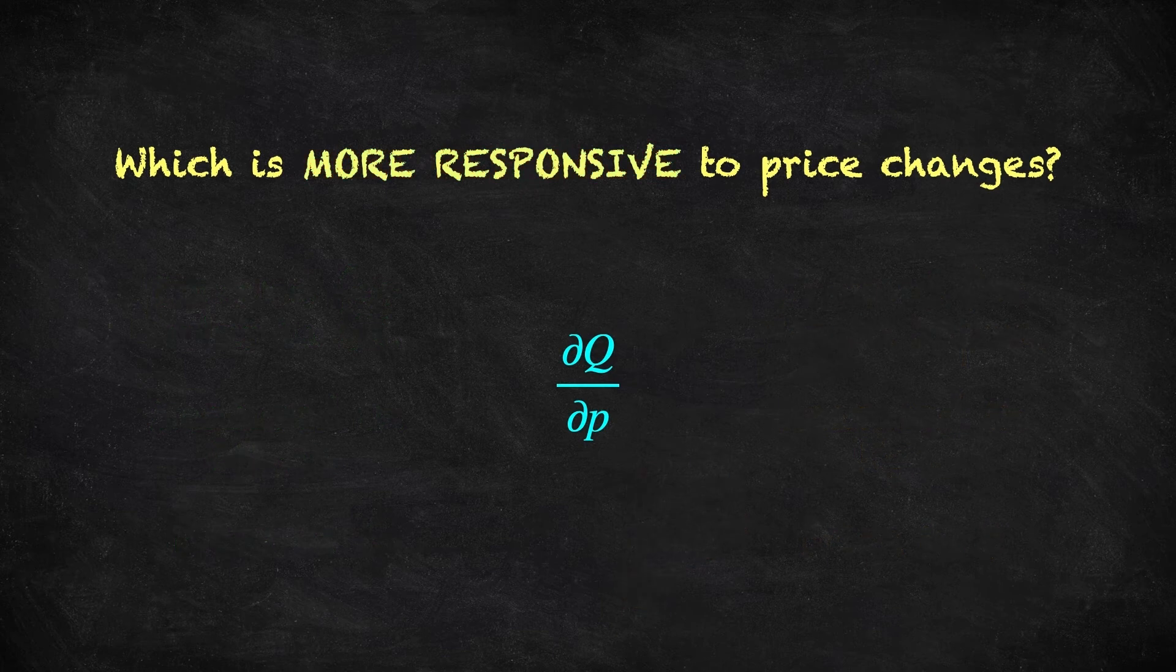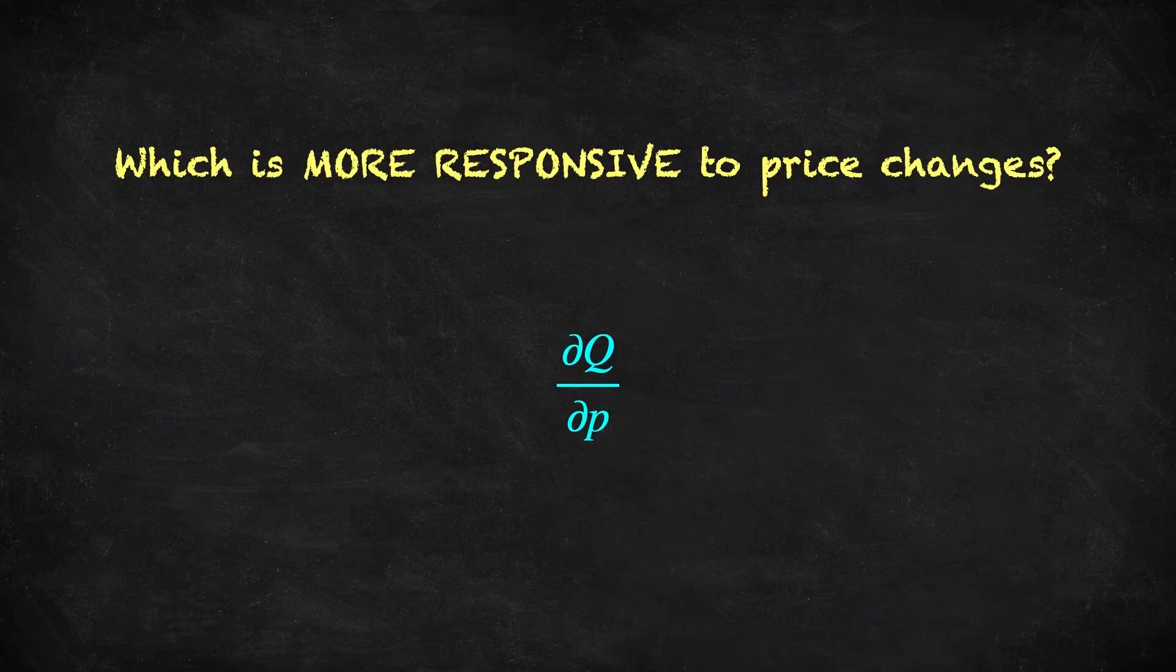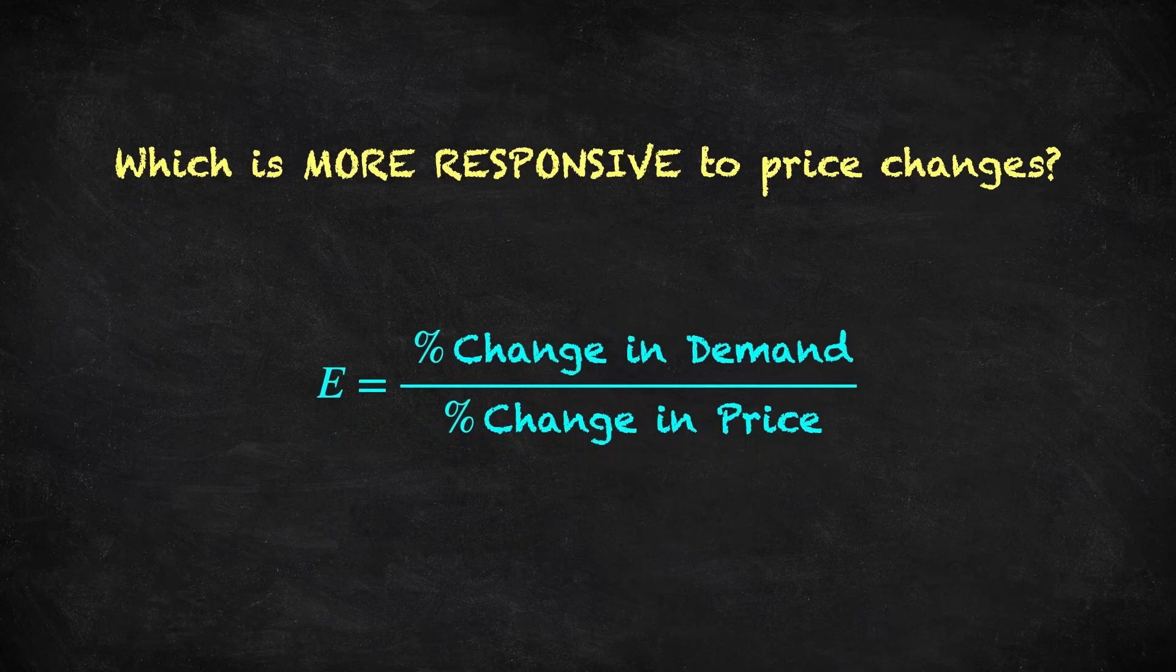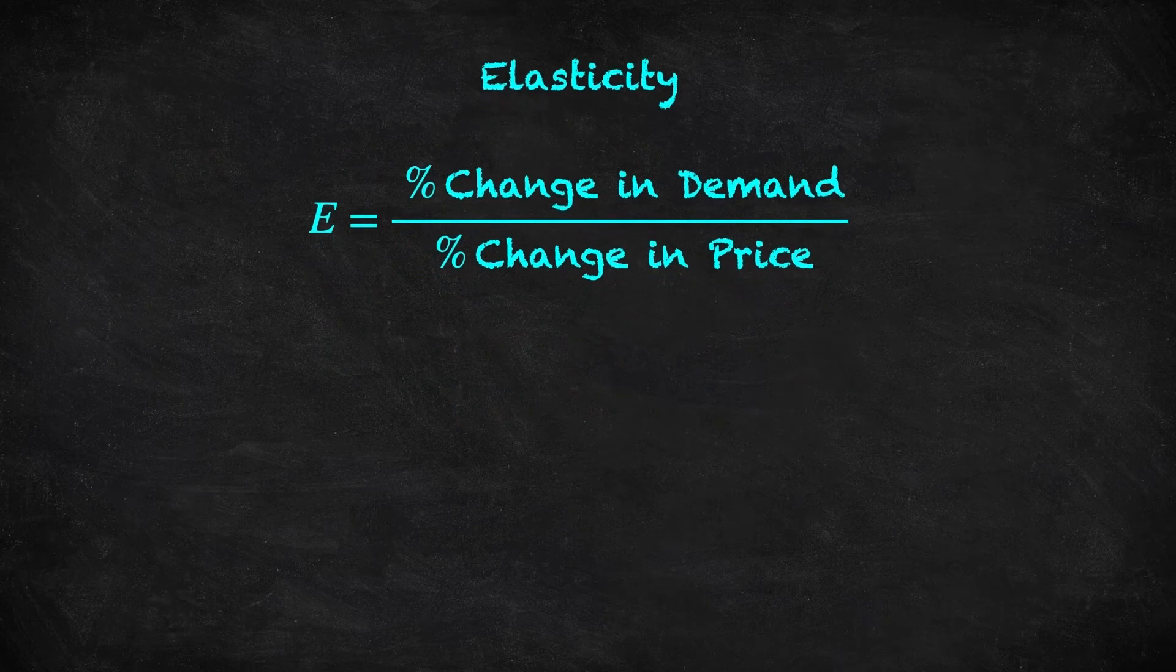OK, so let me show you the idea that's widely used in economics. Instead of looking at absolute changes in price and demand, the idea is to consider percentage changes, or proportional changes. This is what we call elasticity. Let's see how this fixes the problem.